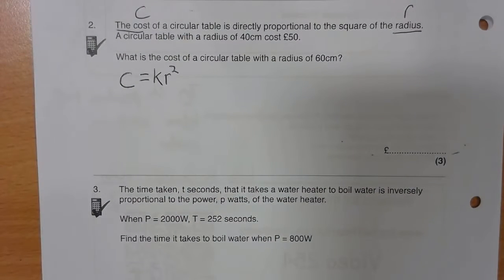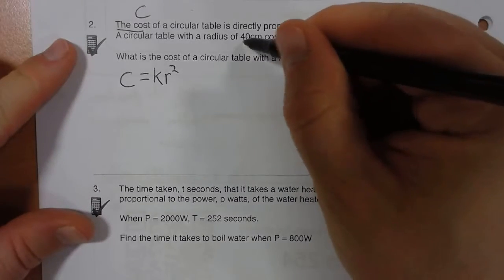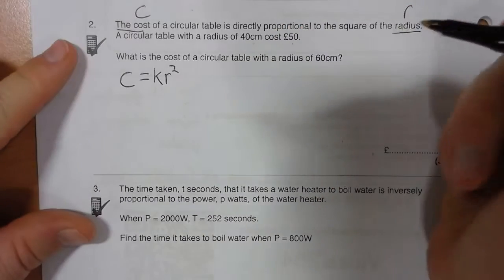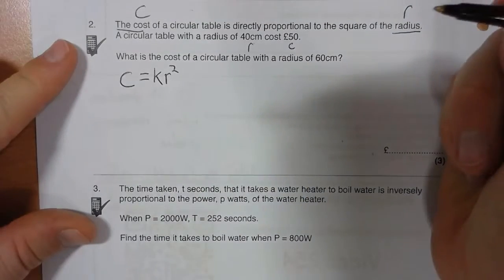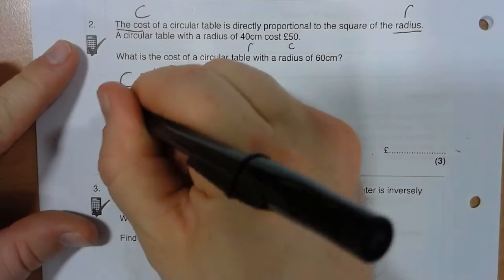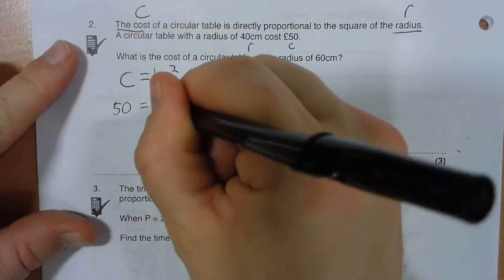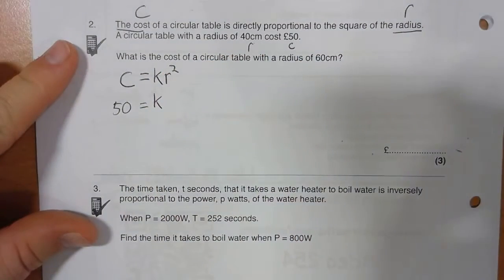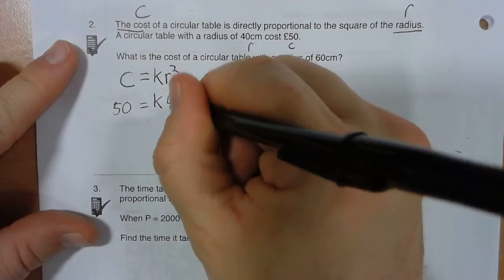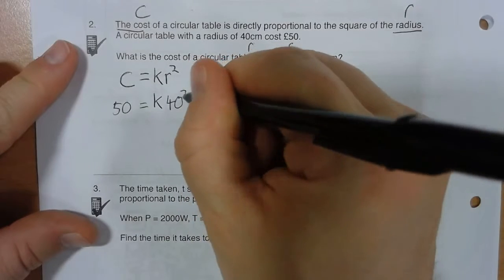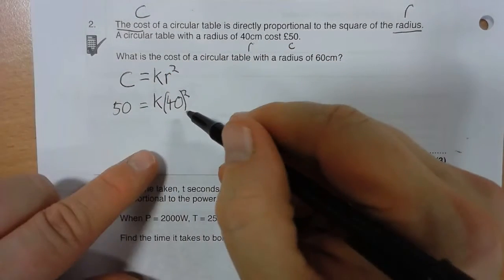That's all I need to do. Now I just substitute in repeatedly and work it out until I've got my answer. So, radius 40 cost 50, so that's my C bit and that's my R bit. So I've got 50 equals K, don't know what that is yet, times by my radius squared. My radius is 40.